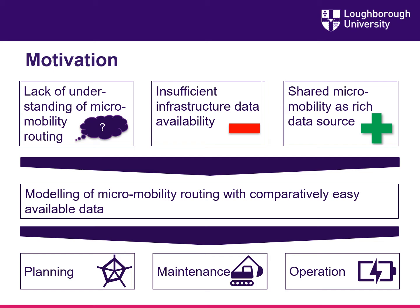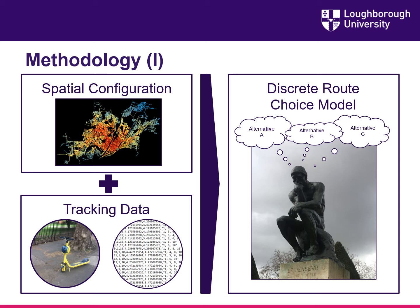As some local authorities struggle to collect sufficient data regarding the infrastructure which can be used by micromobility, our research aims at developing a micromobility route choice model with data which is comparatively easily available. This route choice model shall then be used for planning purposes — namely to make sure that infrastructure is built where it is needed and used — for maintenance purposes such as prioritizing maintenance works, and for operation purposes, for example by making sure that electric vehicles are always equipped with a sufficiently charged battery.